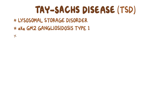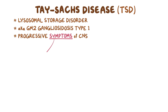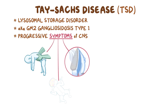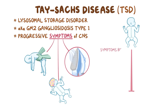This results in progressive symptoms of central nervous system, or CNS, degeneration, like decreased muscle tone, visual difficulties, and seizures, which usually begin by 3–6 months of age, proceeding to death by age 4.